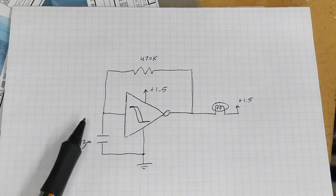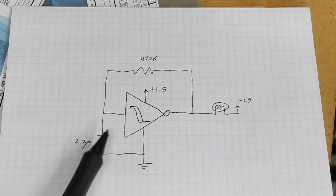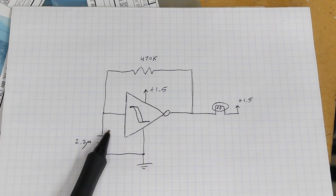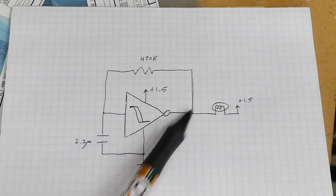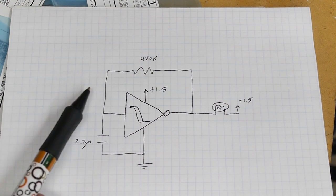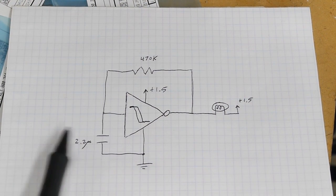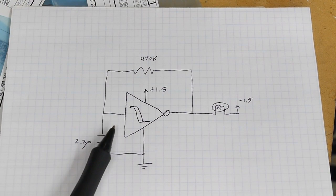But what will happen is eventually the input will reach the switching voltage, let's just pretend it's 0.75 volts, the output will then become 0.75 volts at some point in time, and then the input is 0.75 and everything is stable and the thing won't oscillate.